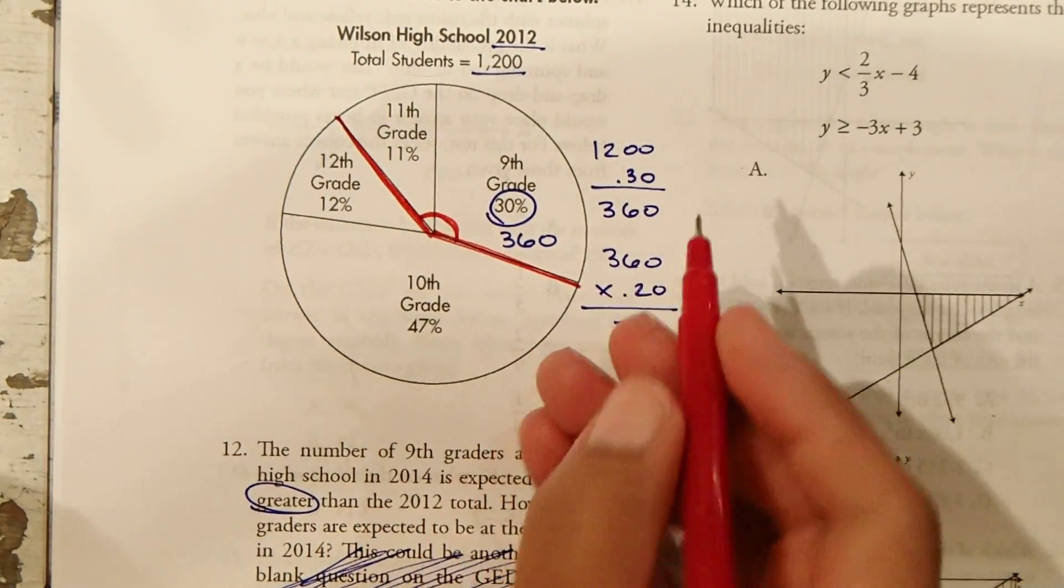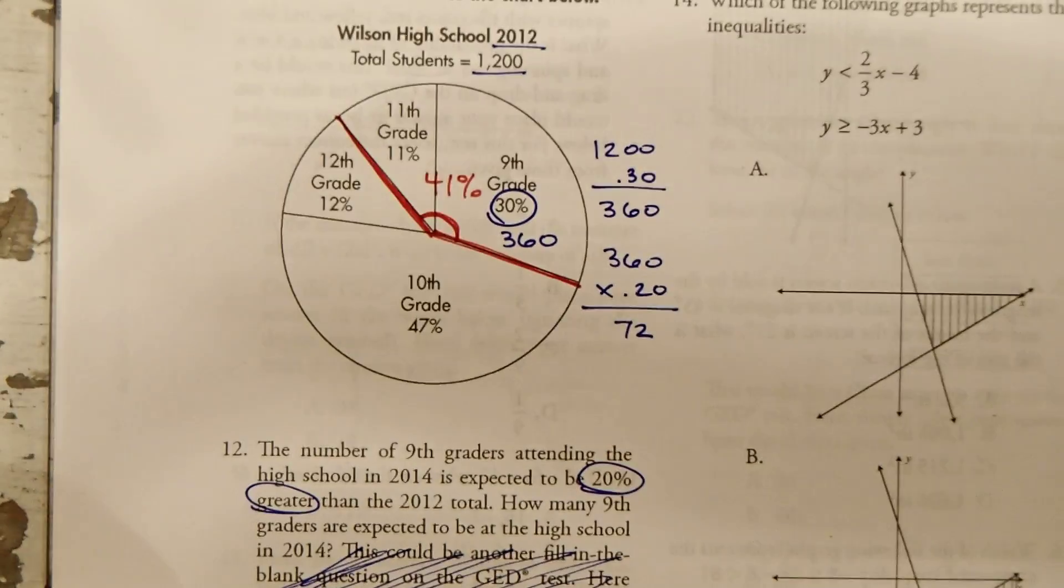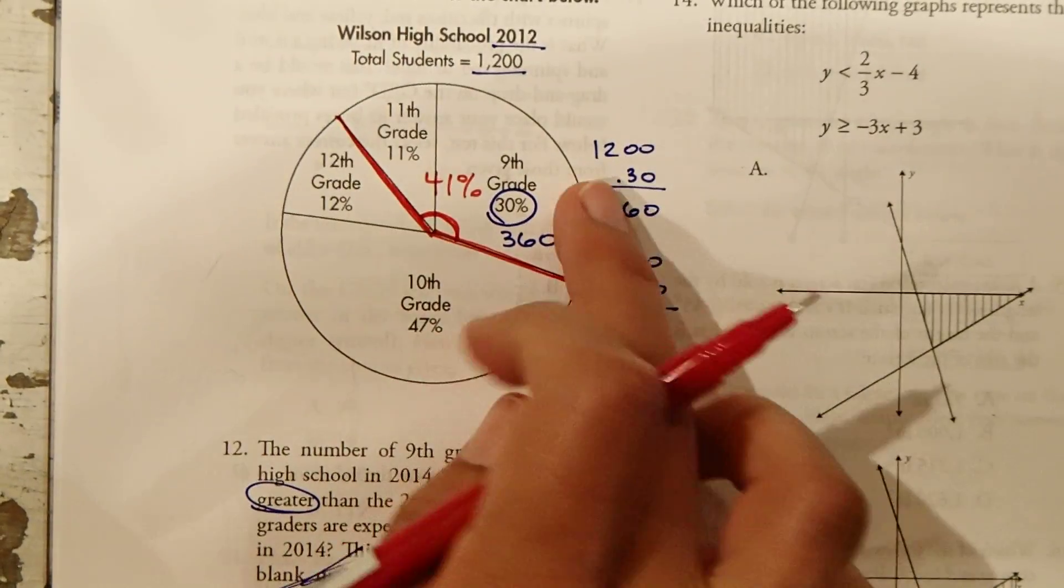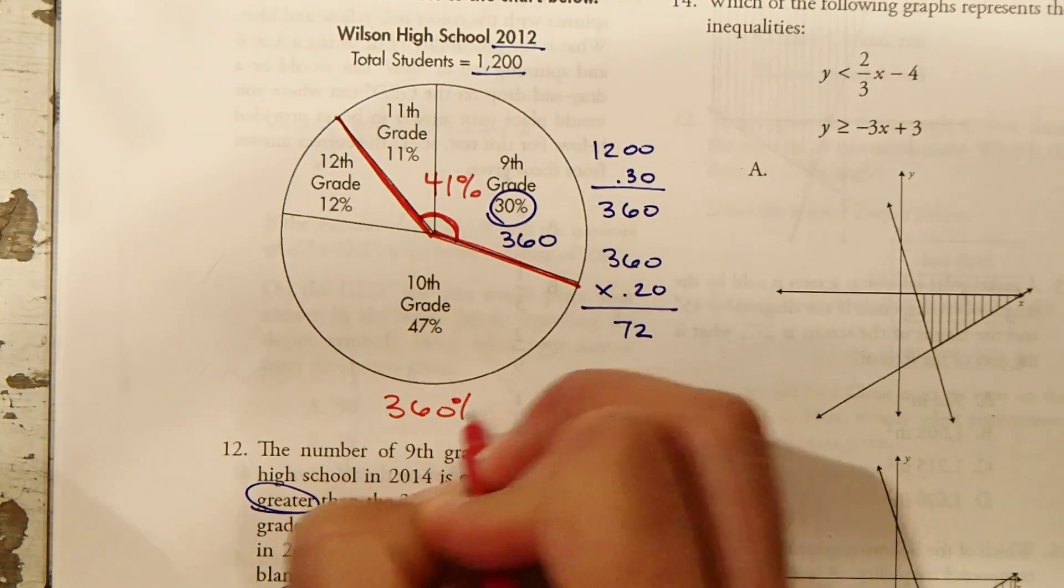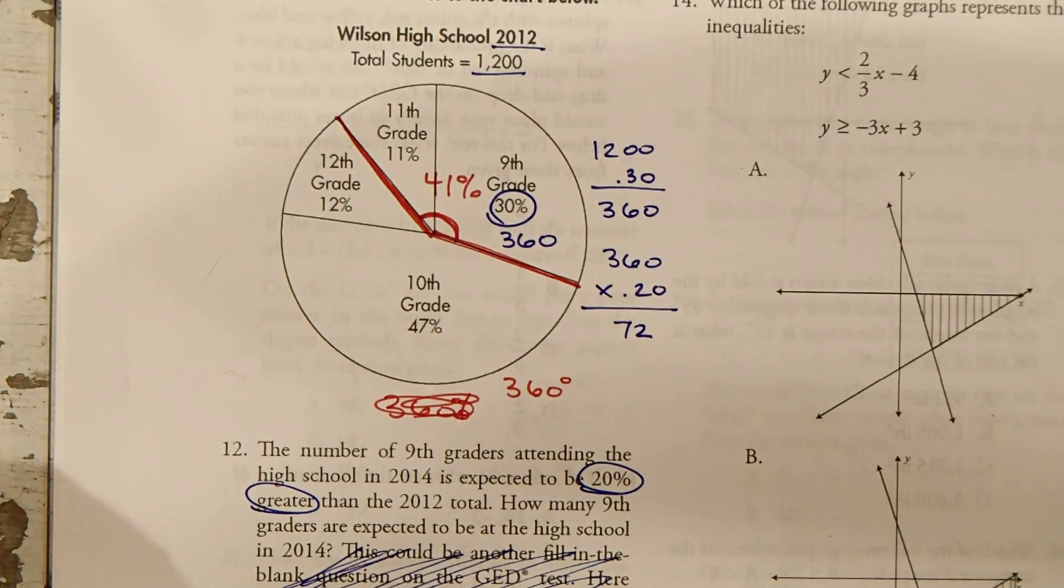This total angle measure represents 41%. So we need to find, if you think about what's the total circle, it's 360 degrees.